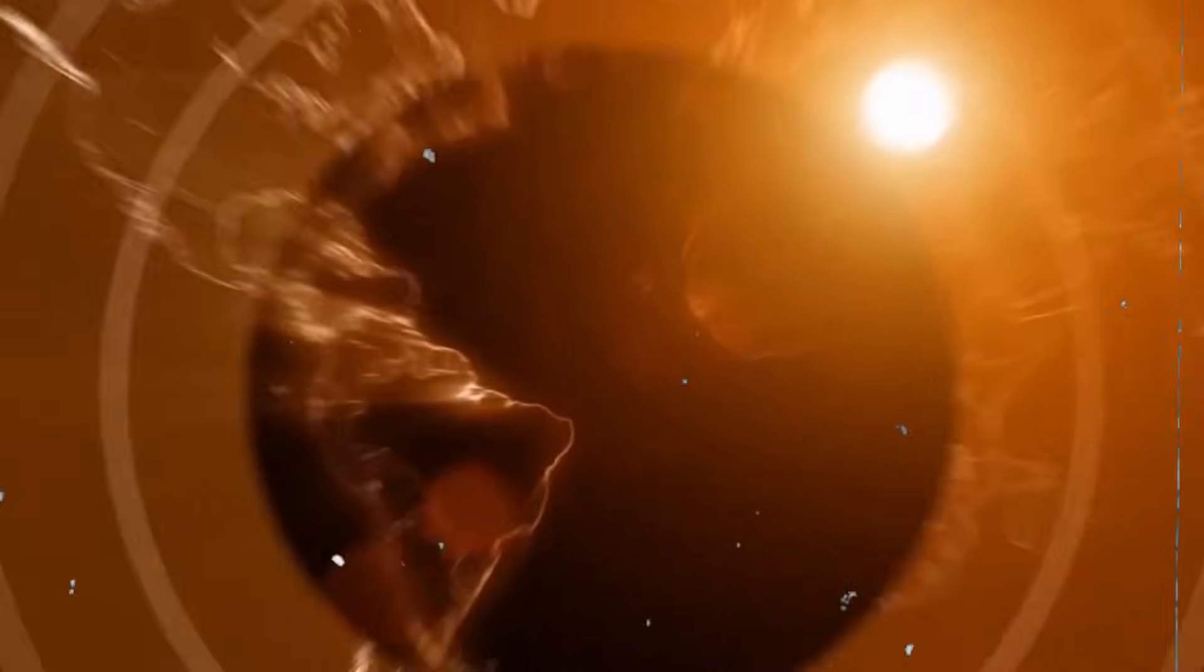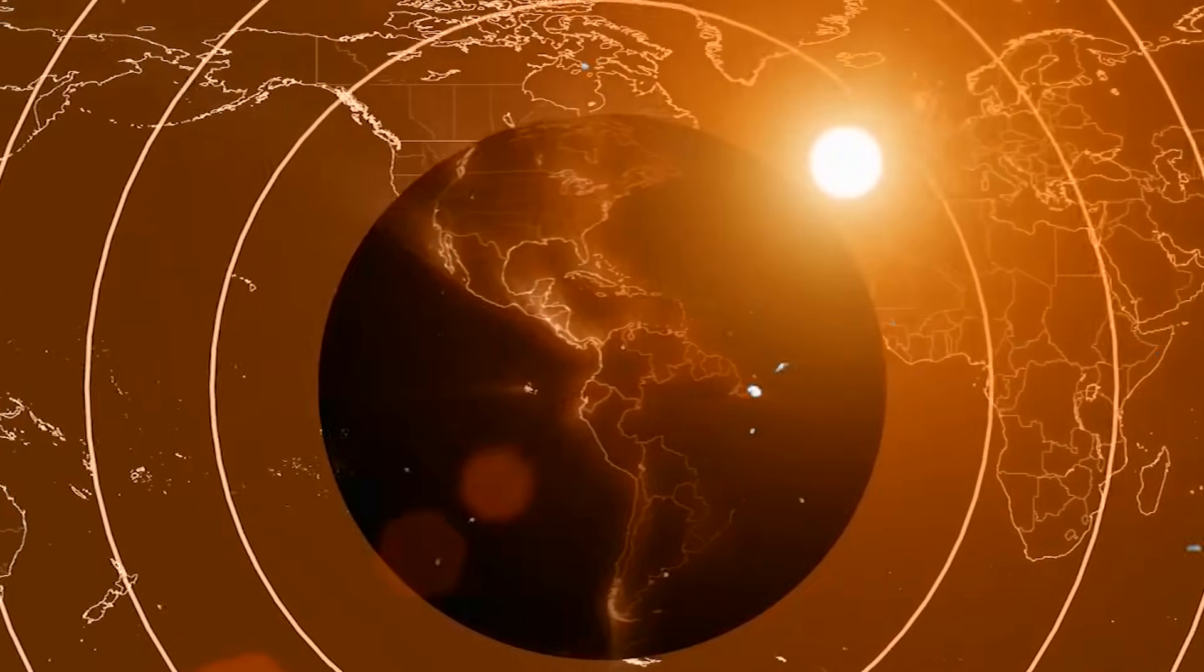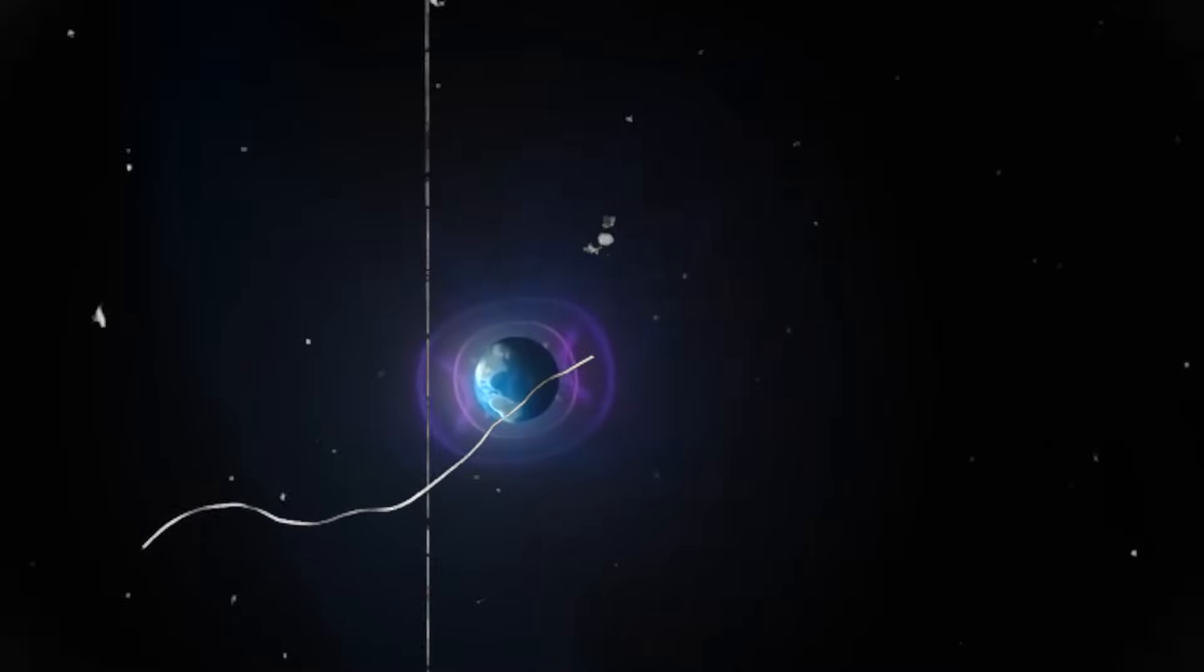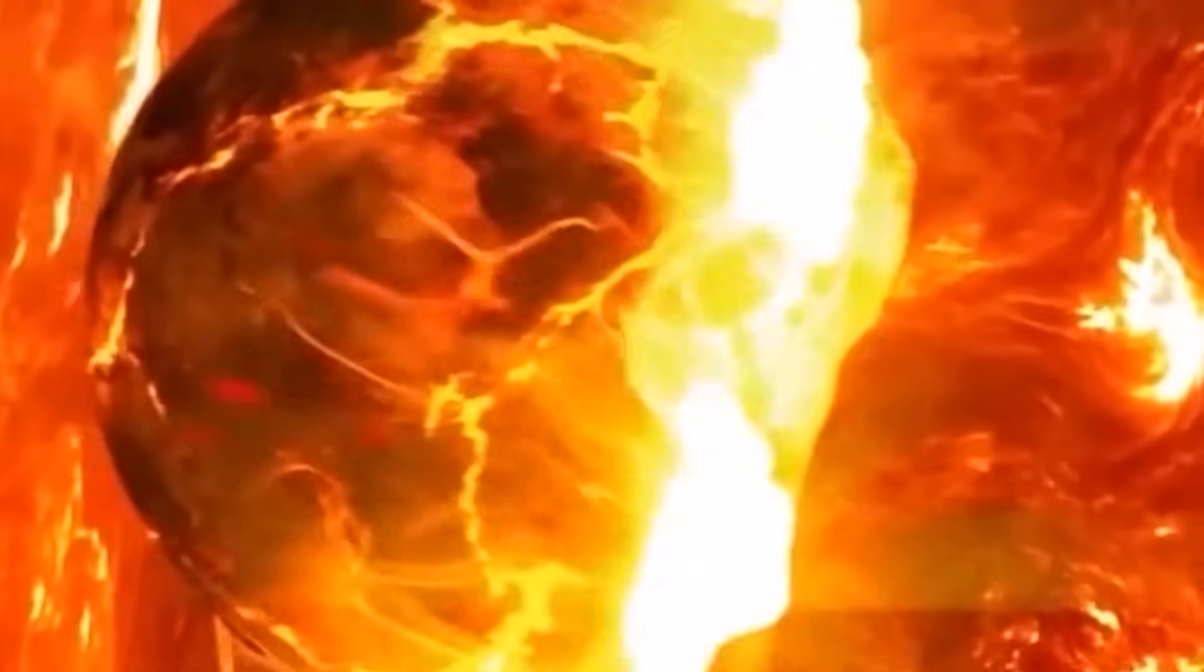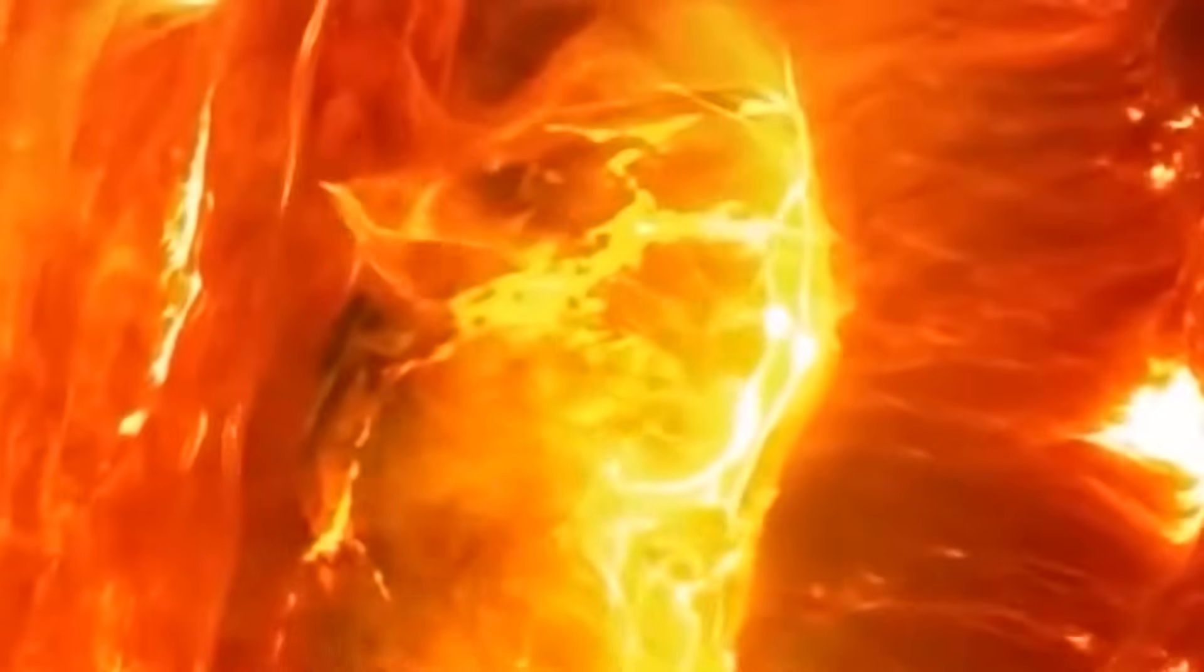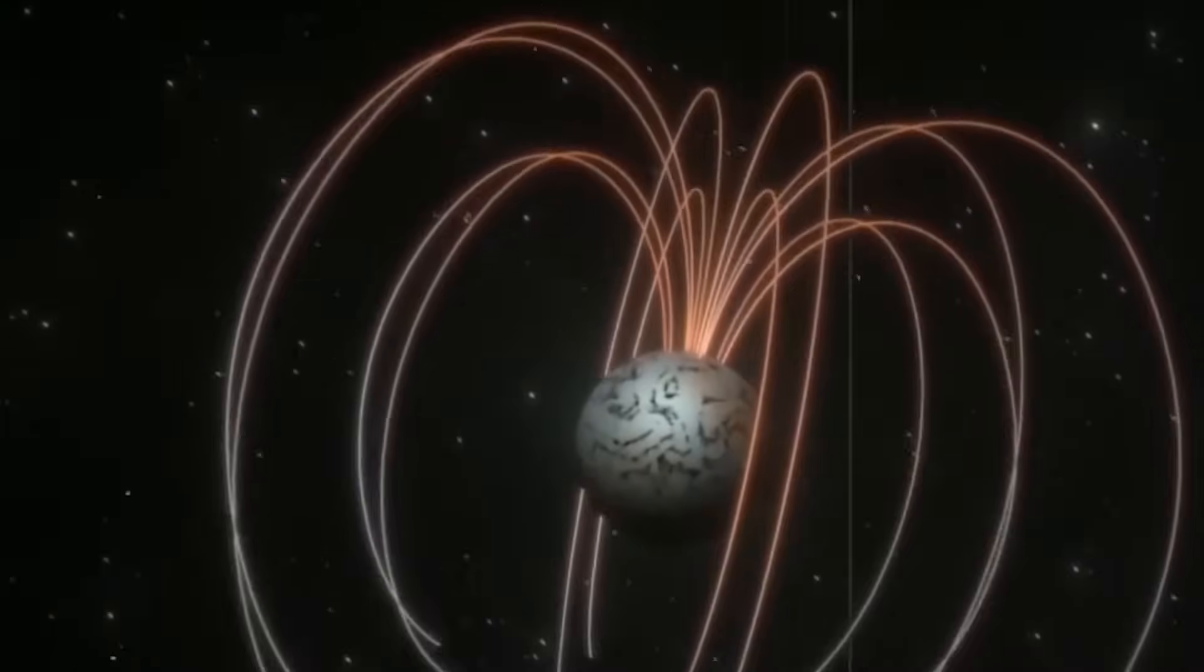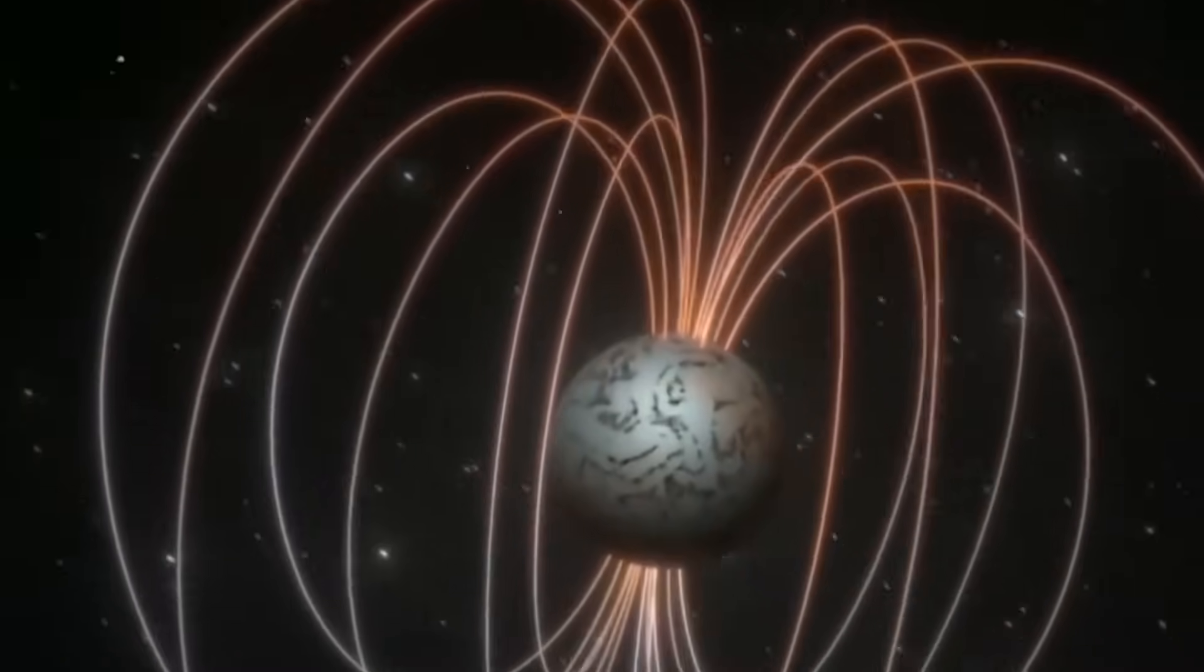The Earth's core plays a key role in generating the magnetic field, a process known as the geodynamo. The core comprises a solid inner part and a fluid outer core, primarily composed of iron and nickel. This outer core is in constant turbulent motion due to the intense heat from the inner core.